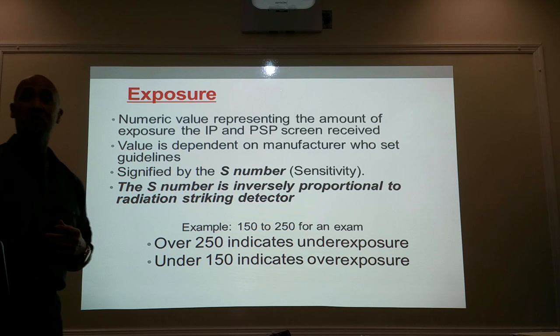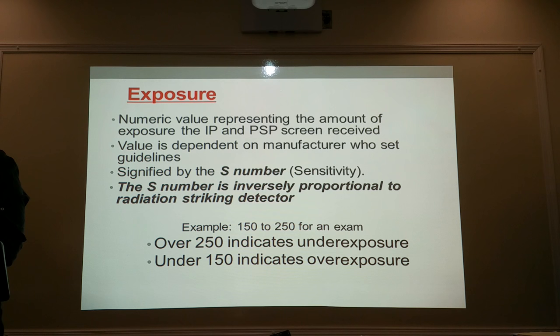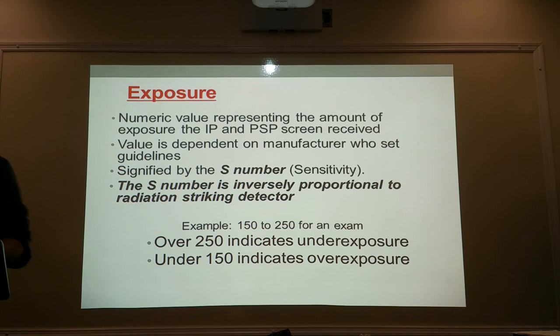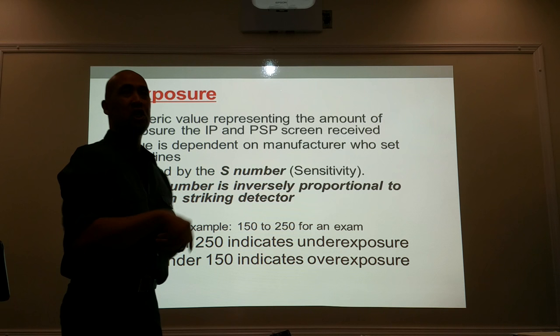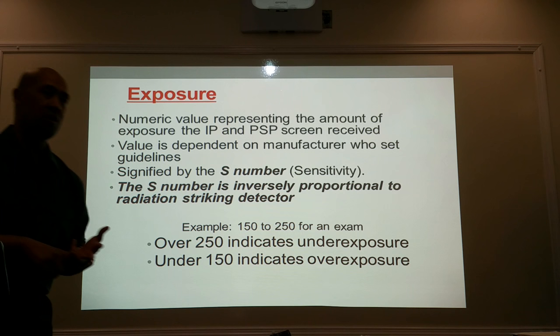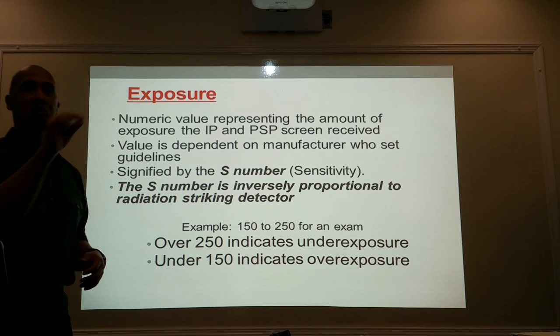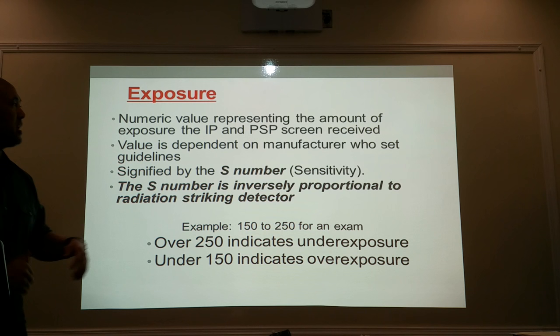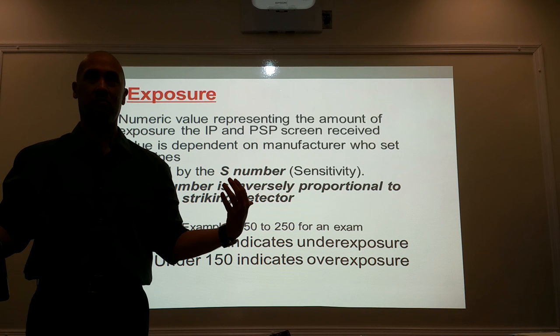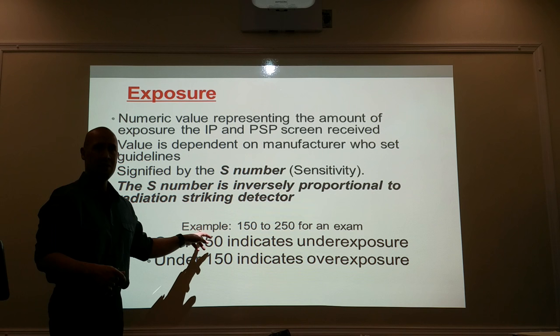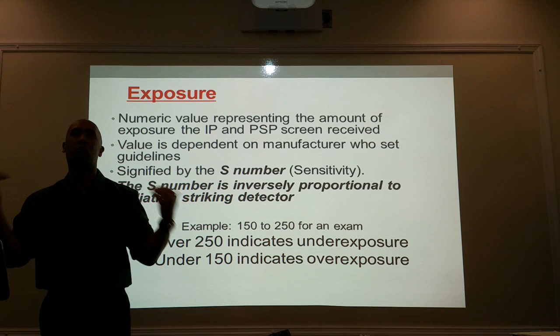There is a way to check this — it's called the exposure units. We're going to cover two of them. The first one is the S number, or the sensitivity number. When the image comes up on your radiographic screen, in addition to the patient's demographic information — name, medical record number, date of birth, time, date, the hospital — there's also going to be a number at the very top or bottom of your screen which will display your S number. For a chest x-ray, a safe parameter of S number should fall between 150 to 250.